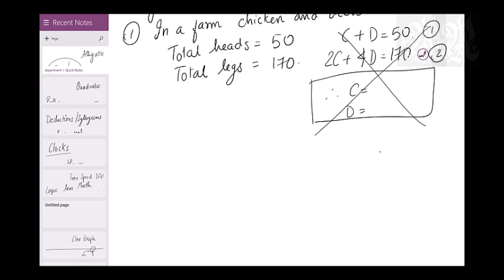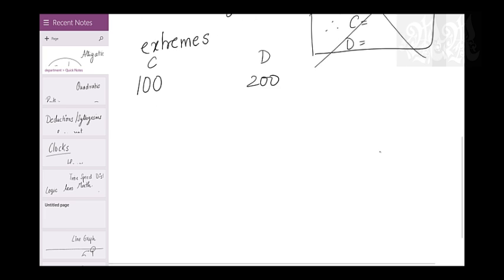Another way of solving this is using allegations. What is allegations? What you do is, you assume. Allegation is about extremes. Keep this in mind. Allegation is all about extremes. So, what you assume is, all are chicken. If all are chicken, how many heads will they have? 50 heads. How many legs? 100 legs. So, they'll have 100 legs. If all are chicken, they'll have 100 legs. If all are deers, they'll have 200 legs. But are all chickens or all deers? No. There's a mix of it. And that mix has how many legs? 170 legs.